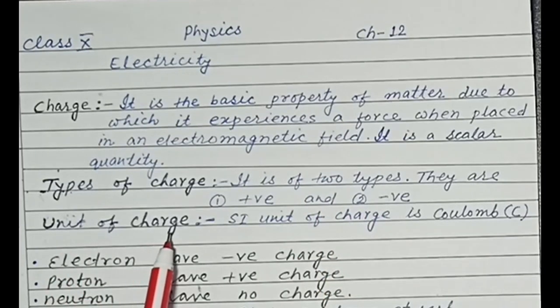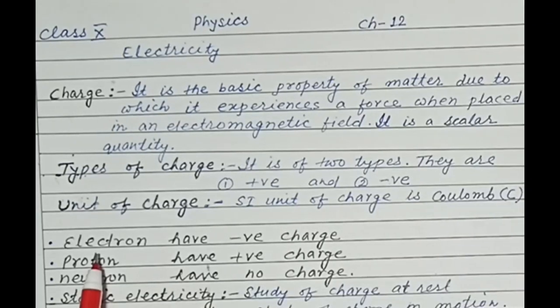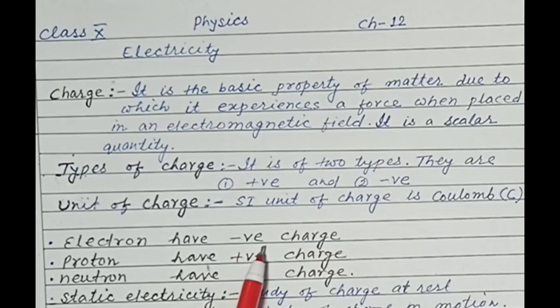Unit of Charge. The SI unit of charge is Coulomb. The symbol of Coulomb is capital C. Electron have negative charge. Proton have positive charge. Neutron have no charge.